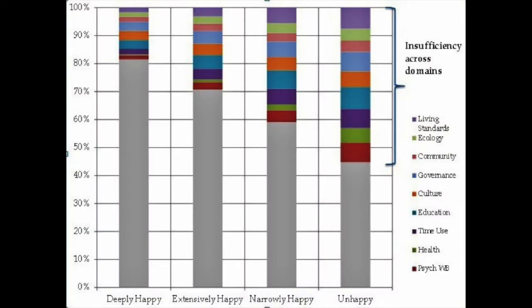The gross national happiness index is based on a representative survey conducted in all 20 districts of Bhutan including both rural and urban areas. It divides the population into four subgroups based on the levels of sufficiency achieved, including unhappy, narrowly happy, extensively happy and deeply happy.